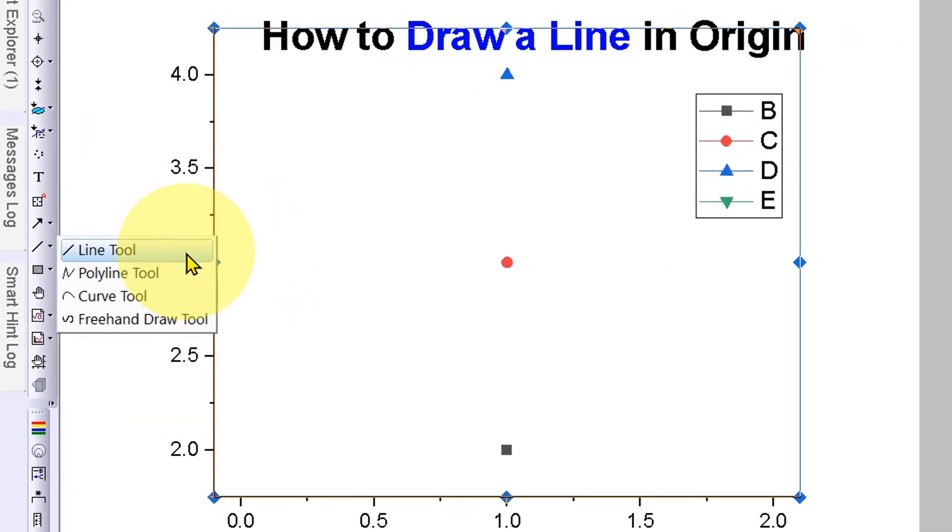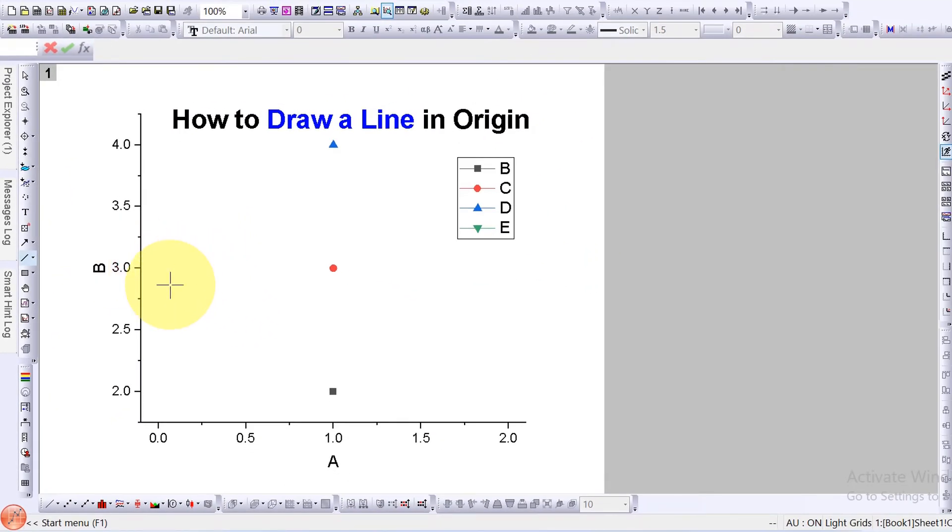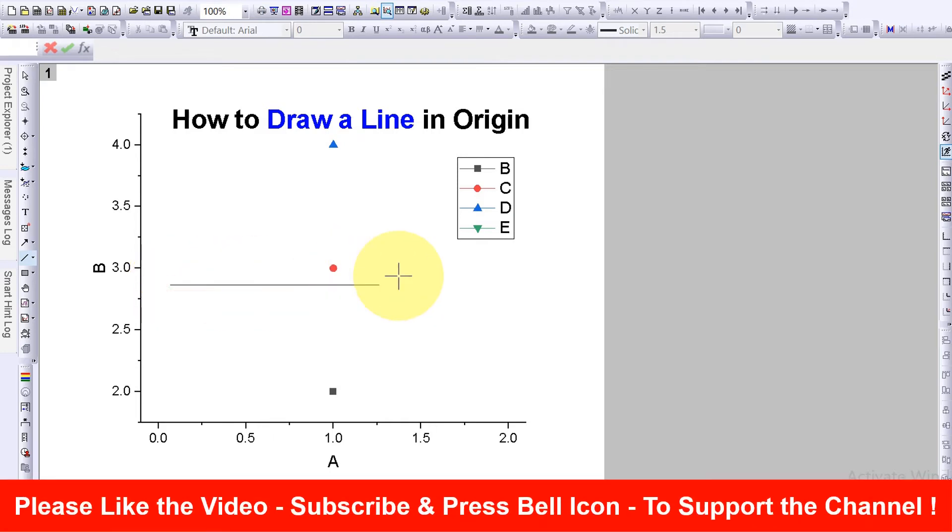Now if you want to draw a straight line, always press Shift on your keyboard and then draw a line. The line will always be straight. By default, the thickness of this line is very less.